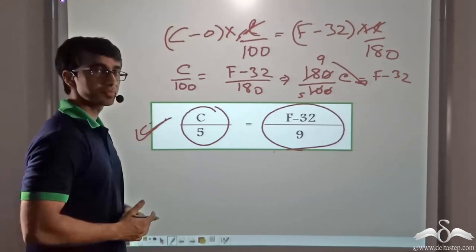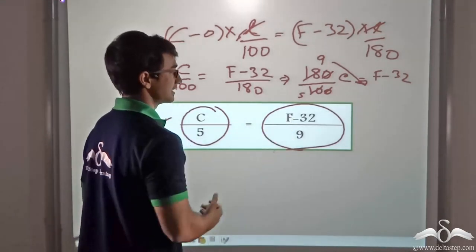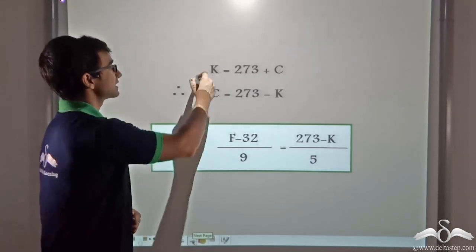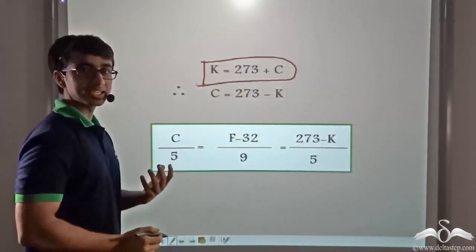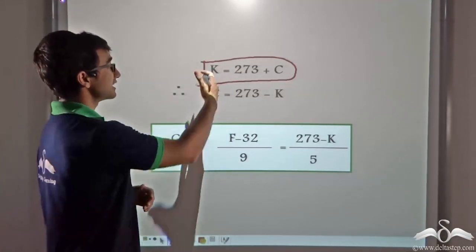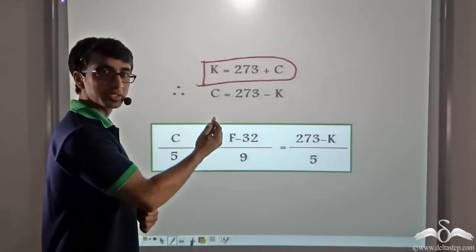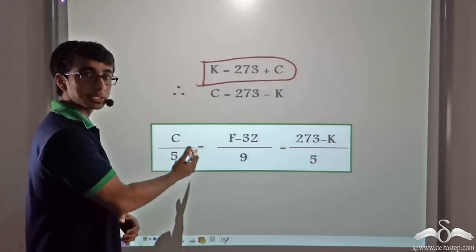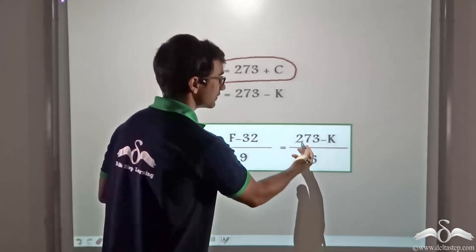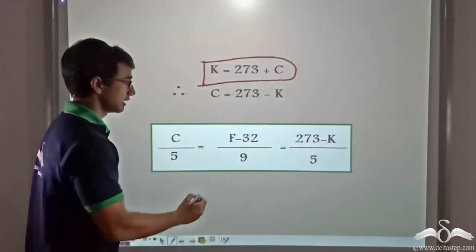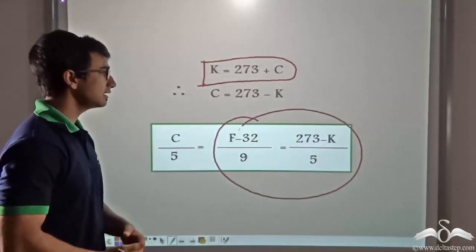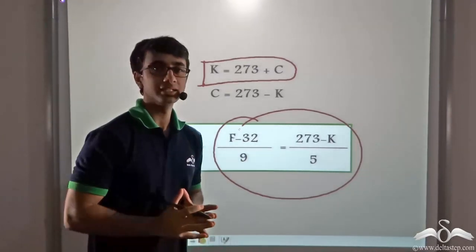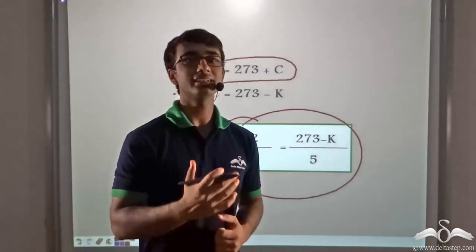We have seen that the Kelvin scale is related to the Celsius scale by K = 273 + C, which can be rearranged to C = K − 273. By substituting this value of C into the Celsius-Fahrenheit formula, we get (K − 273)/5 = (F − 32)/9, giving a relation between the Fahrenheit scale and the Kelvin scale. So we have learned about the three thermometric scales: the Celsius scale, the Fahrenheit scale, and the Kelvin scale.